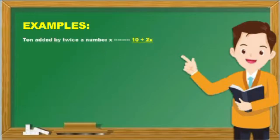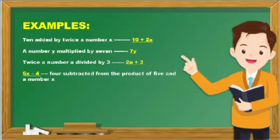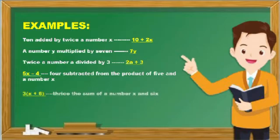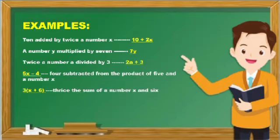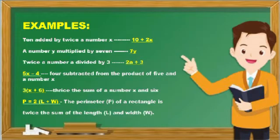Ten added by twice a number x. A number y multiplied by 7. Twice a number a divided by 3. 4 subtracted from the product of 5 and a number x. Twice the sum of a number x and 6. And the perimeter of a rectangle is twice the sum of the length and width.